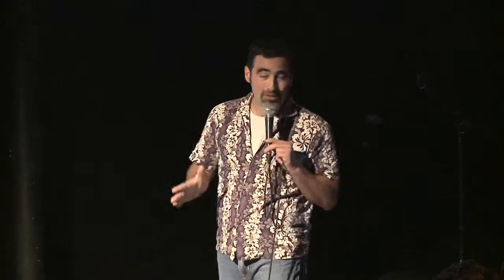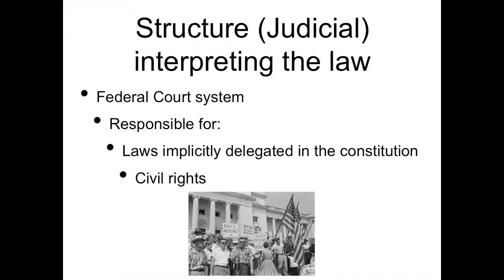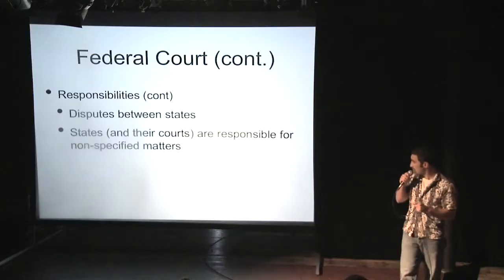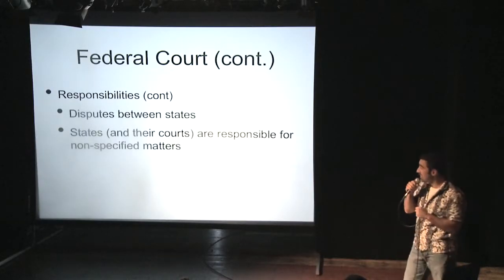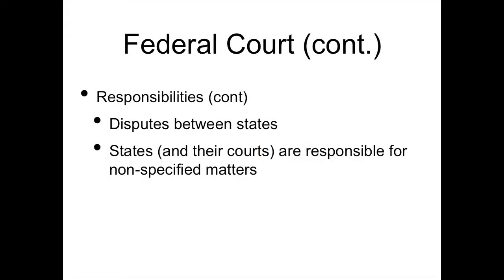Lastly, we have the judicial branch, which serves to interpret the law. I'm only going to talk about the federal court system. It's responsible for laws implicitly delegated in the Constitution — for instance, civil rights: every man and woman is equal. Responsibilities of the federal court include disputes between states, and then states and their courts are responsible for anything not specified in the federal constitution.